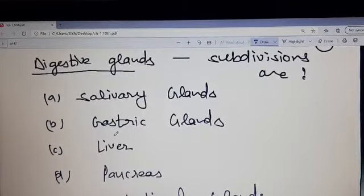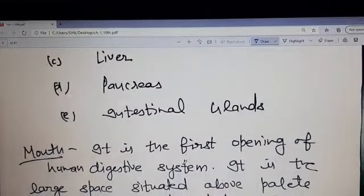Digestive glands: salivary gland, gastric gland, liver, pancreas, intestinal gland.